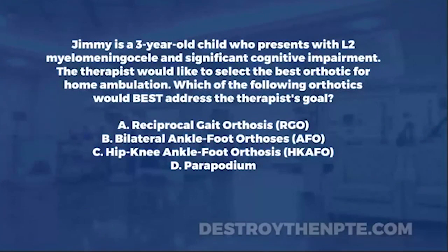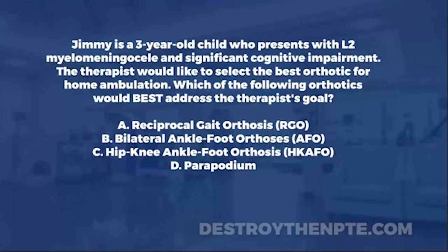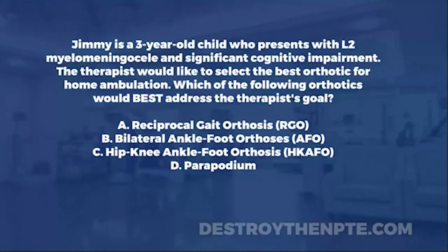Let's start at the top. Jimmy is a three-year-old child with L2 myelomeningocele. I want to slow up for a moment because it's really important to understand what myelomeningocele means. Myelomeningocele is a neural tube defect — the posterior aspect of the spine does not form, and the spinal cord starts to protrude through the meninges into a meningeal sac.